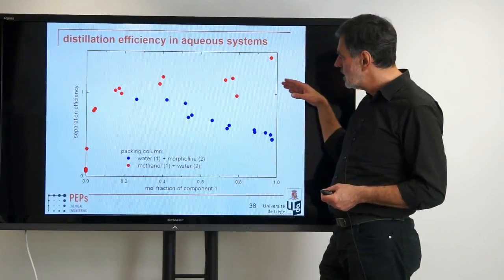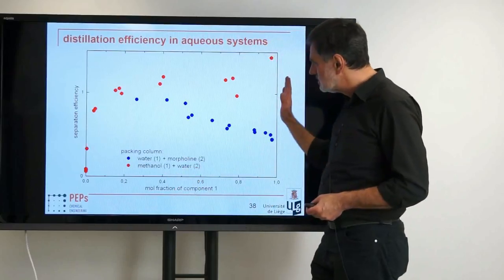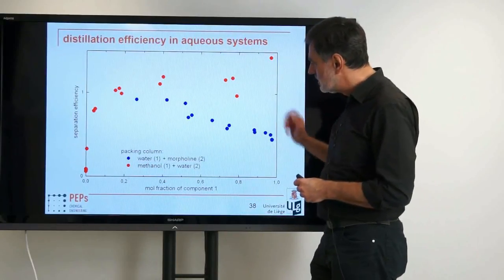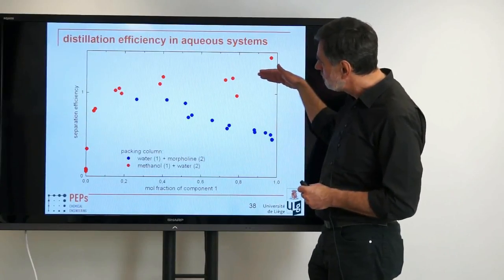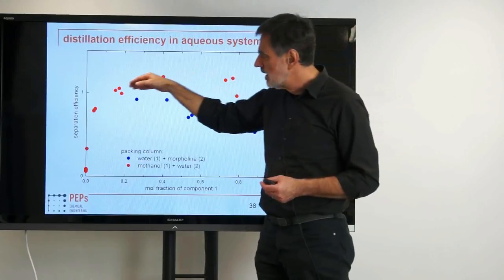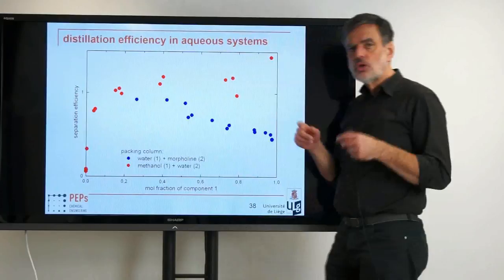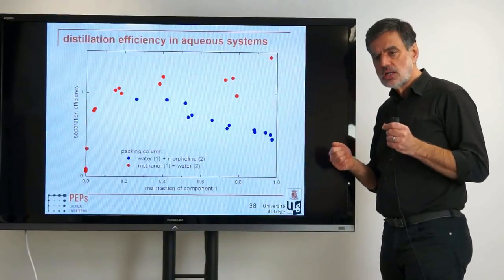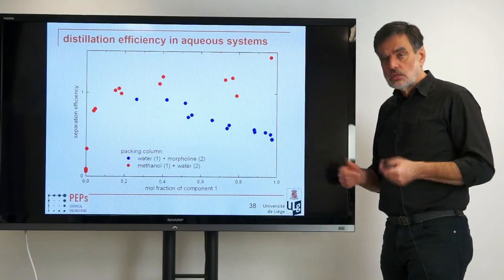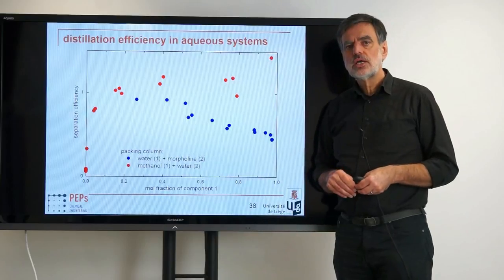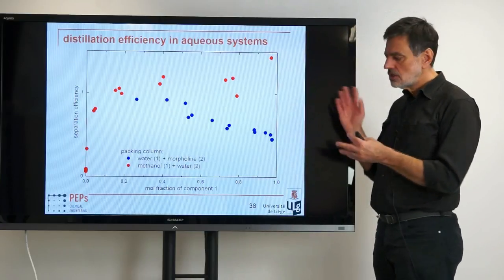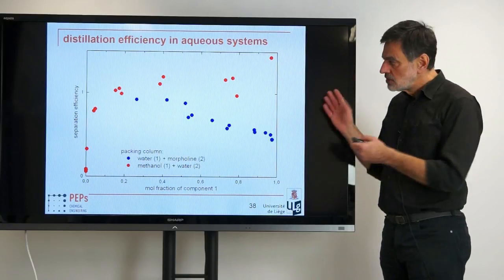For the methanol-water system it's worse. Starting on the methanol side you have typical efficiency values, but then it drops to less than 10% of what you would expect. So if you want to remove traces of methanol from water, you need to build the distillation column at least 10 times as high for that concentration range. In industry it was observed that especially on the water-rich side, distillation sometimes had significant problems. We investigated that, built models for it, and explained where that is actually coming from, besides quantifying it in this way.